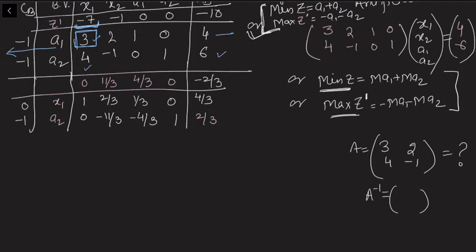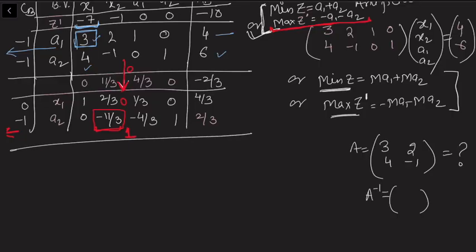This means we need to intentionally enter the x2 variable. We are intentionally entering x2 because we desire to find the inverse of the given matrix. Even though entering a variable with a positive zj − cj deviates from the optimal solution in a maximization sense, we leave the corresponding entry of −11/3 so that it becomes the pivot element — this makes it 1 and the remaining entries 0. This is the tricky part of finding the inverse via the simplex method.